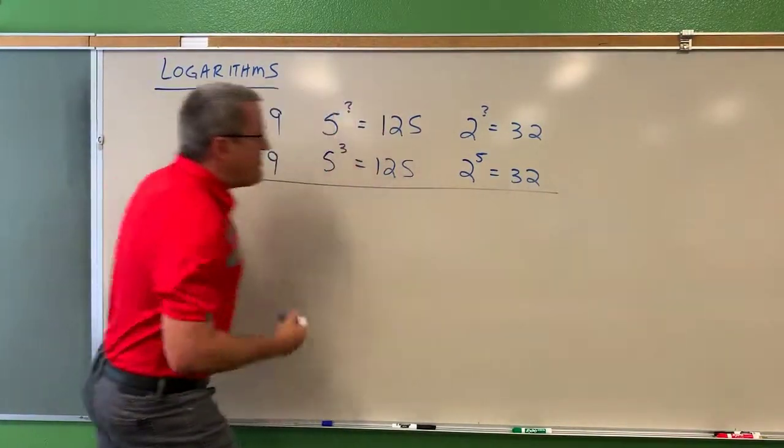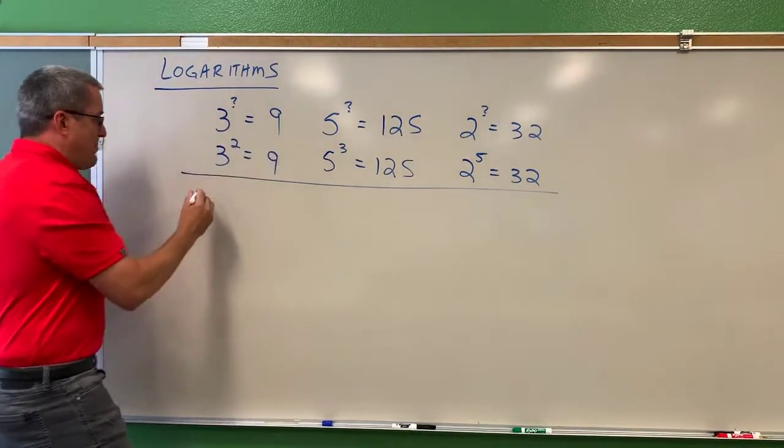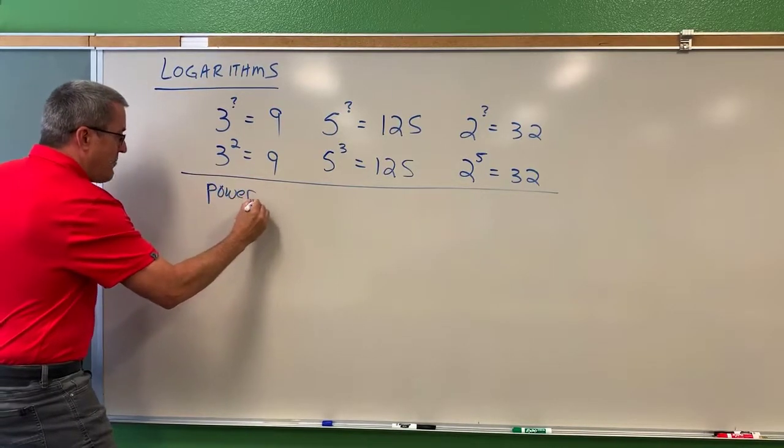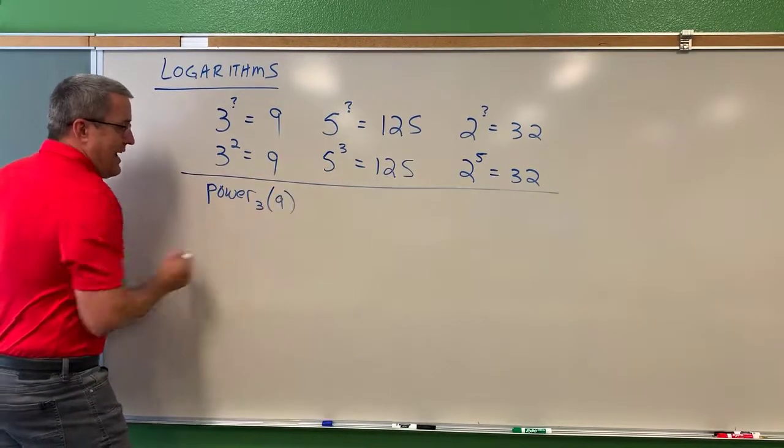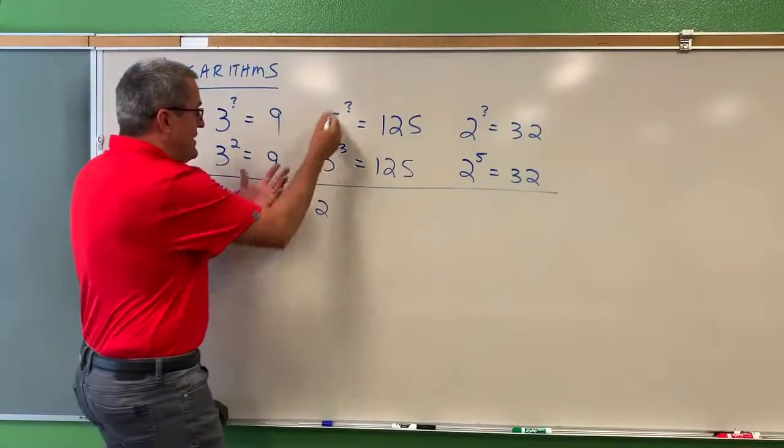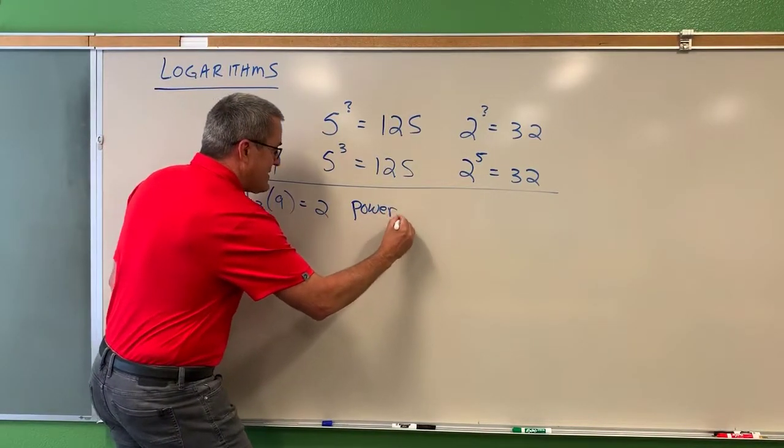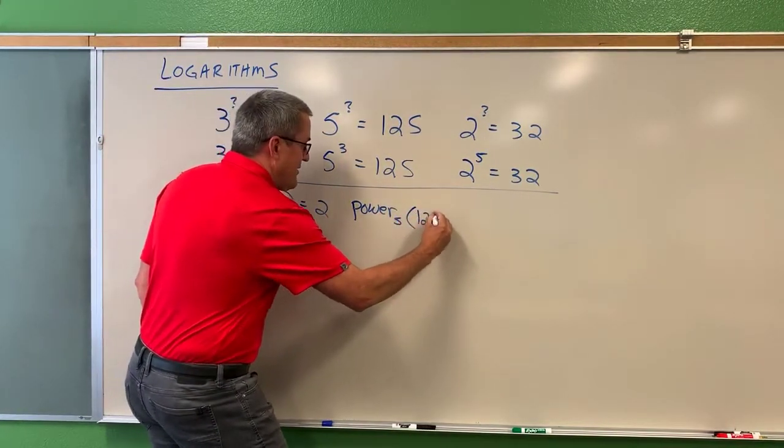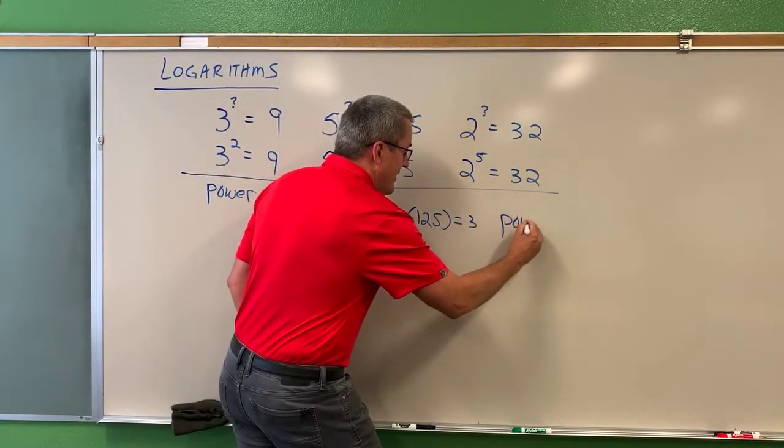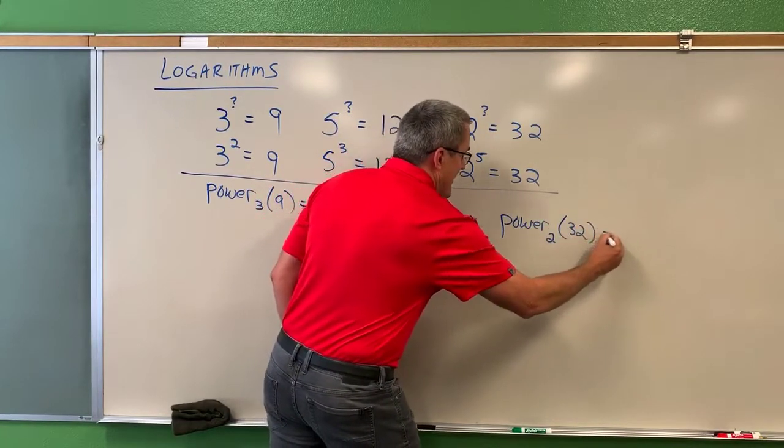The way that we might think about this is we're looking for a power on a base of three that produces nine. So we would say there's a power on a base of three that produces nine. What is that power? That power would be two. Or in this case, we're looking for the mystery power on a base of five. So we would just say there's a power on a base of five that produces 125, and we know that that power is three. Or in this case, there's a power on the base of two that produces 32, and we know that that power is five.